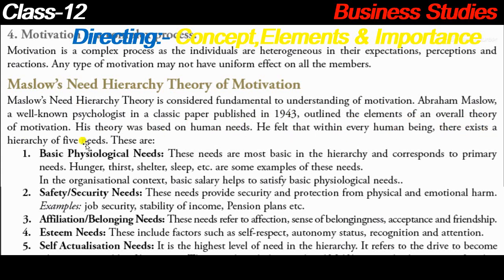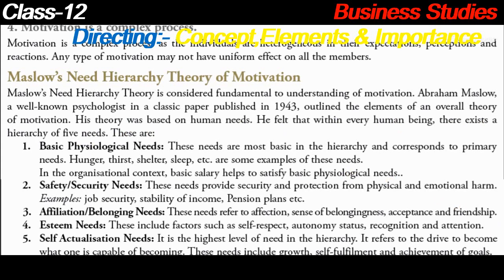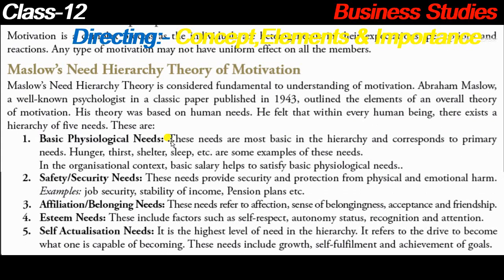According to Maslow, every person has five basic needs and they act according to those needs. The first is basic physiological needs - the most fundamental in the hierarchy, corresponding to primary needs like hunger, thirst, shelter, and sleep. These are examples of our basic needs.